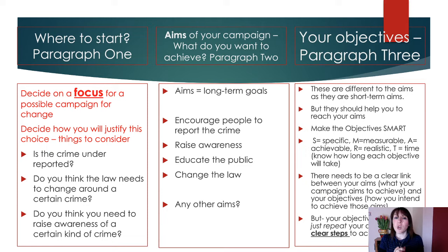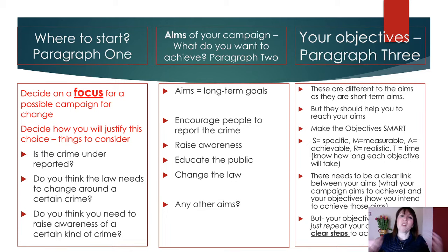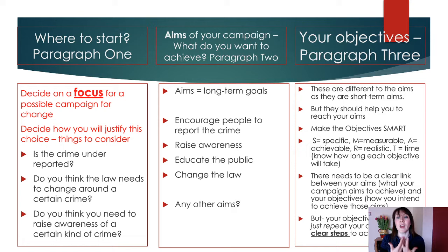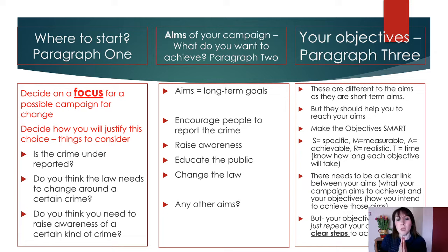Paragraph two is your aims. What are the aims of your campaign? Your aims have to be long-term goals and it can't just be 'bring about change of awareness' — we need far more specifics. You're looking at at least four different aims. You have to imagine you're actually going to do this campaign. Think: I am campaigning for this, where do I start, what would I do? Examples include: encourage people to report the crime, raise awareness, educate the public, change the law.